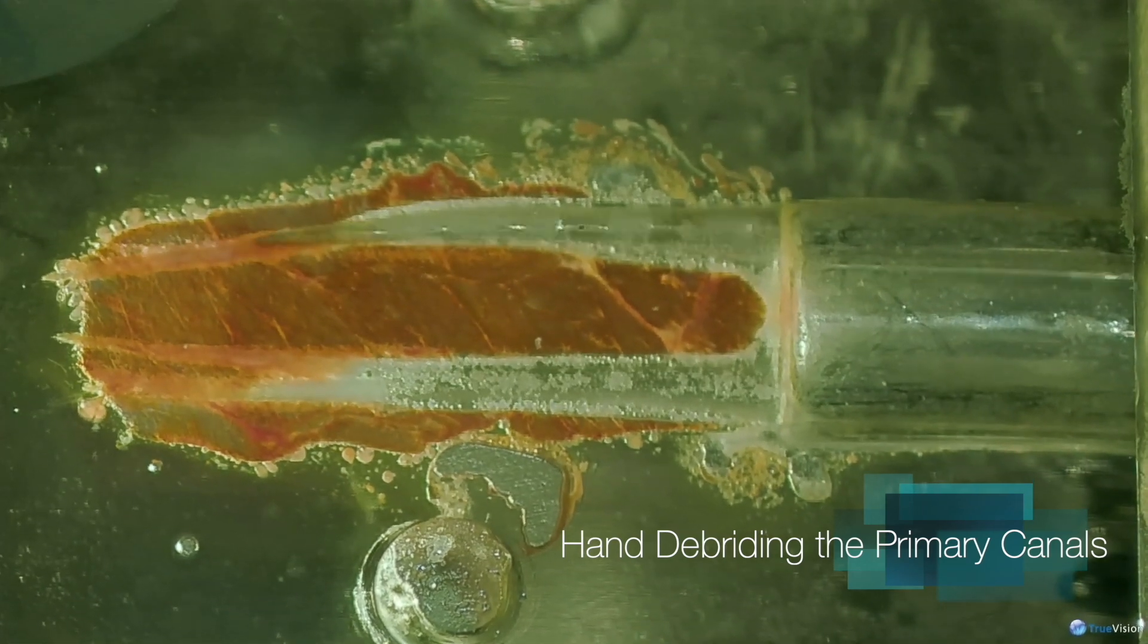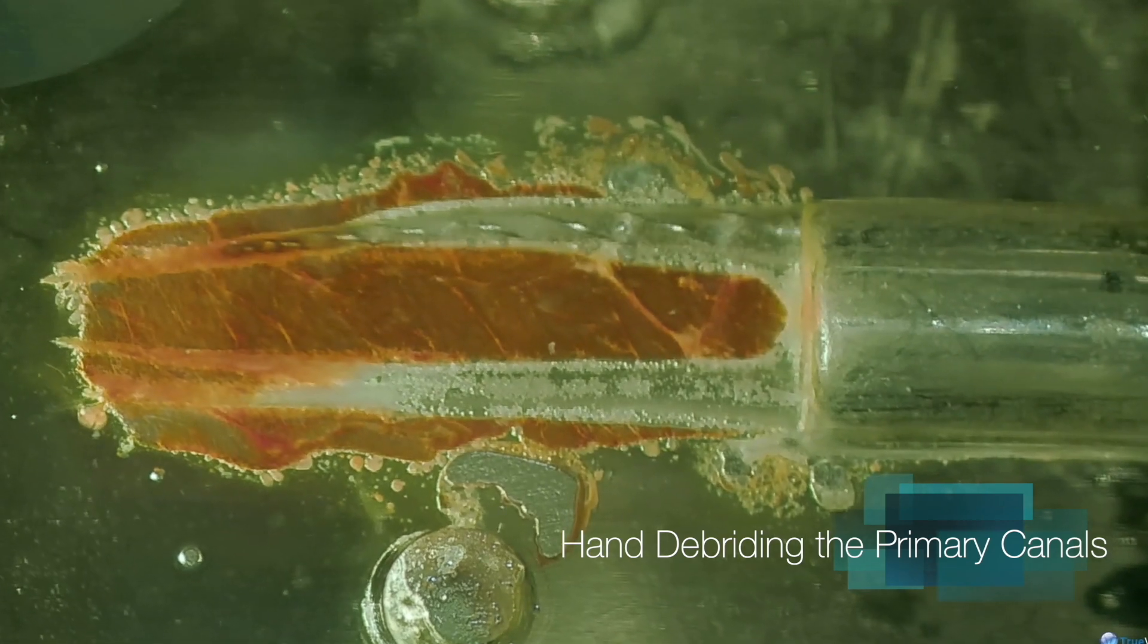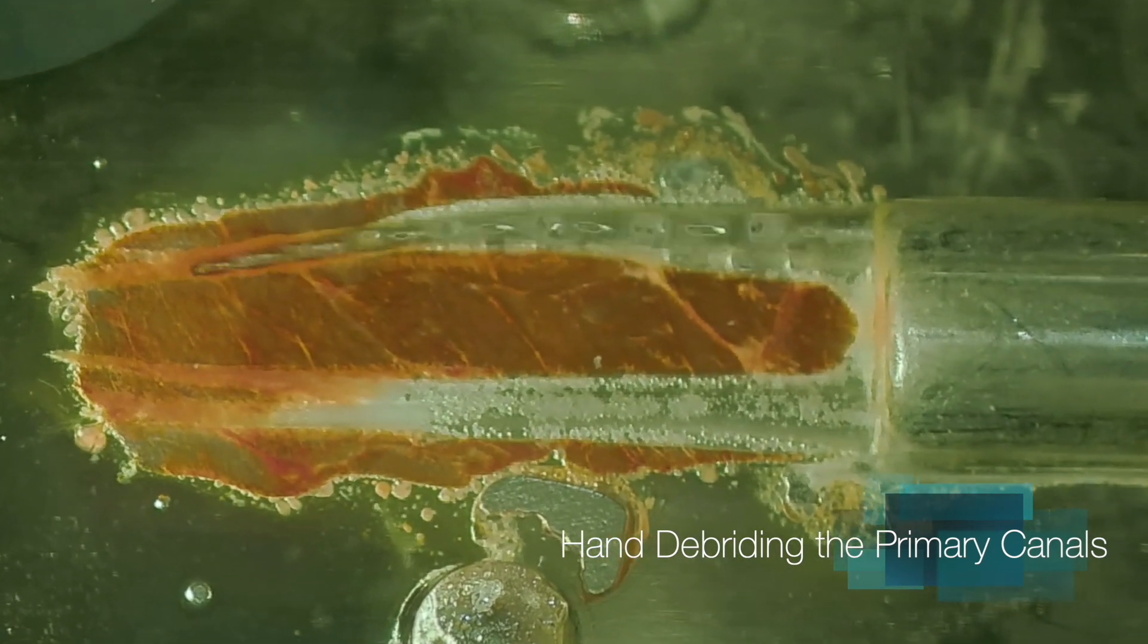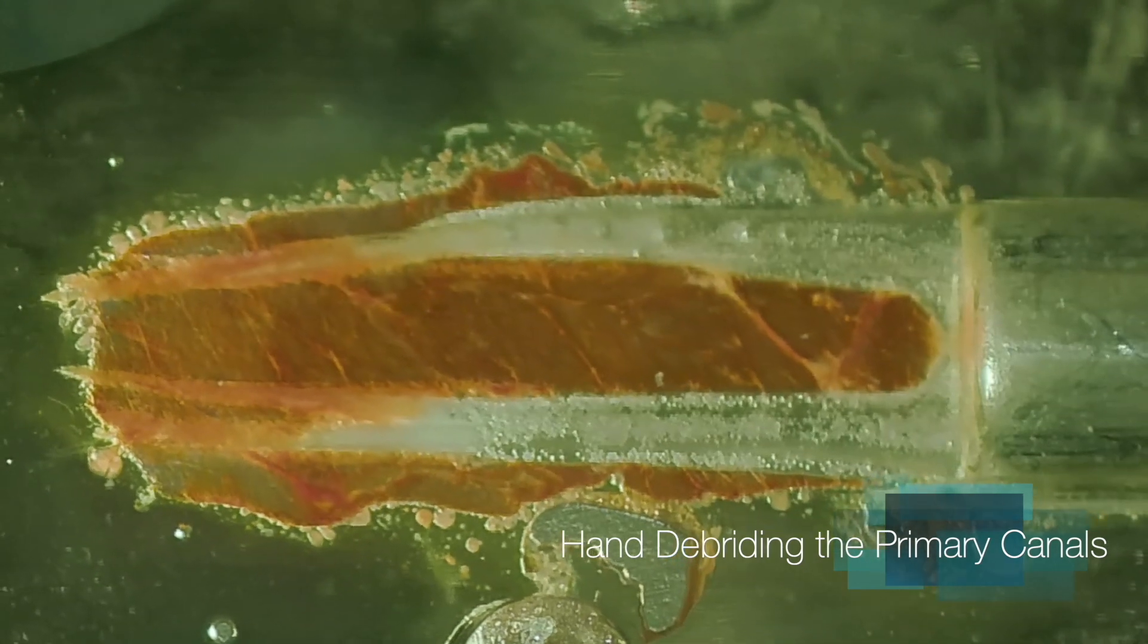Again, hand instruments debriding the primary canal. Using larger files, that was a 10. This is a rotary file used by hand. Still, all the debris pretty much left there.